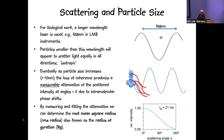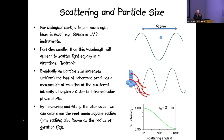Normally in biological work we use a wavelength in the red region — in the case of LMB instruments, it's 658 nanometers. The reason is mainly to avoid any absorbance present in biological molecules. Particles smaller than this wavelength will appear to scatter light equally in all directions: so-called isotropic scatterers.